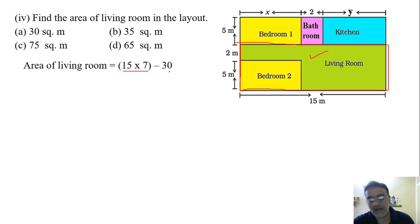So area of living room equals 15 into 7 minus 30. 30 is the area of one bedroom what we got in the previous question. So 105 minus 30, we will get 75 square meter. So which option is the correct option? C. Right.